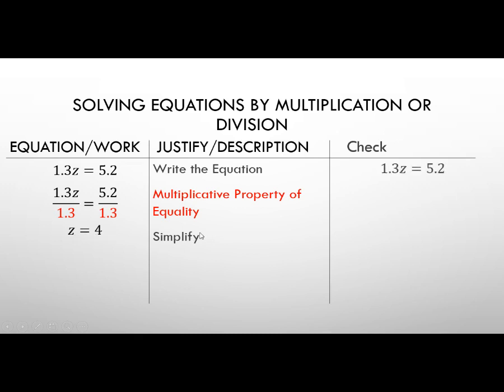To check our answer, rewrite it. We've got this multiplication right here, so I'm going to put it in parentheses as I switch that up. So 1.3 times 4 becomes 5.2. 5.2 definitely equals 5.2. So 4 is the number that z needs to be in order for this equation to be true.